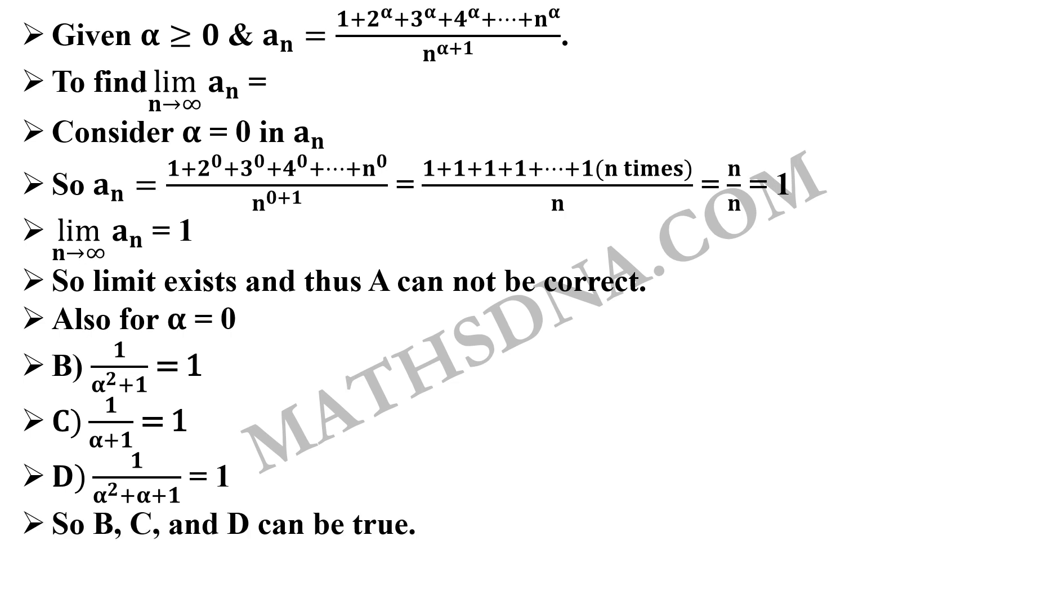Now here comes the point where you need to be very careful with the options, with the values, and with the examples. You can always eliminate the option. You cannot say that the option is correct but you can always say that the option is not correct. So as we took alpha equals to 0 it gave us that option a is not correct but b, c, and d can be correct. So now we need to take another value of alpha and check does it satisfy all the three options or still any options are eliminated.